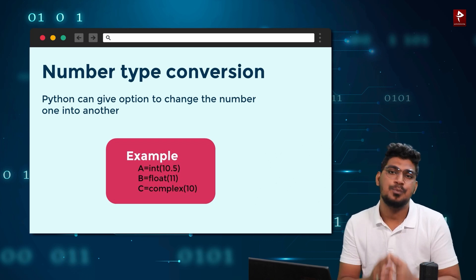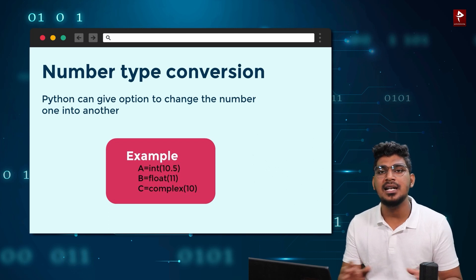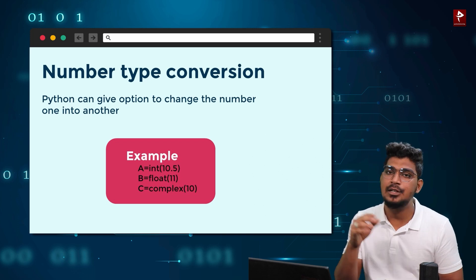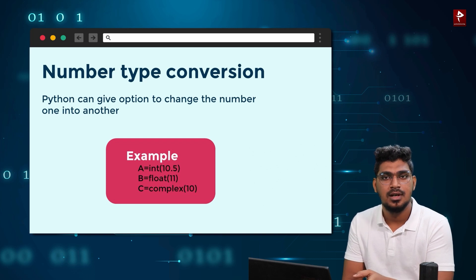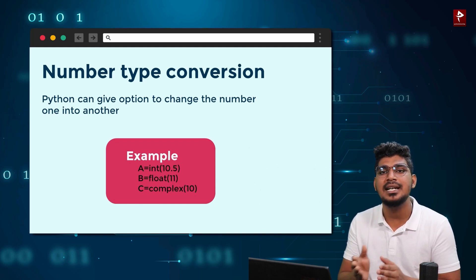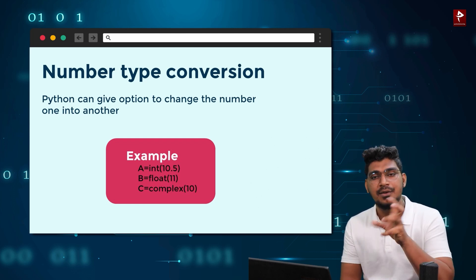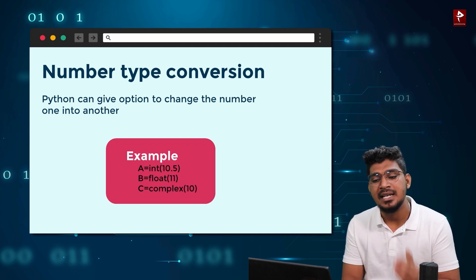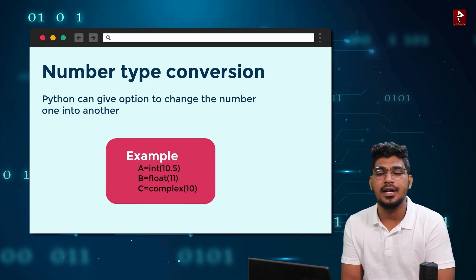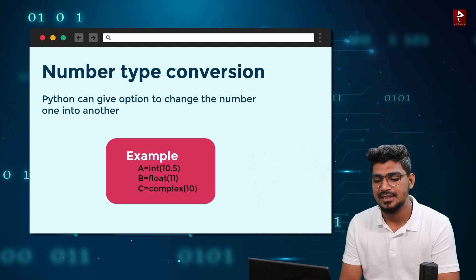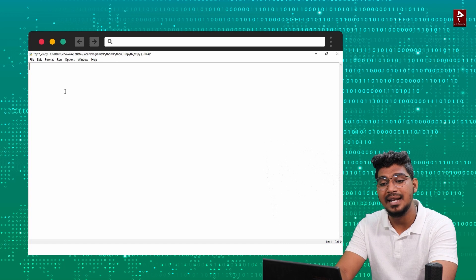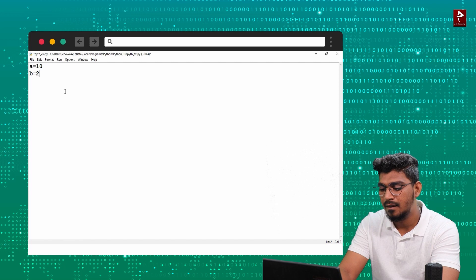For example, A is equal to 10.5 — that is a float number. So Python can change the data type. We need to convert float into integer. We know 10.5 is a float number. To convert, we have certain keywords: int, float, complex. So in IDLE, for example: A is equal to 10, B is equal to 20, C is equal to 2.5.